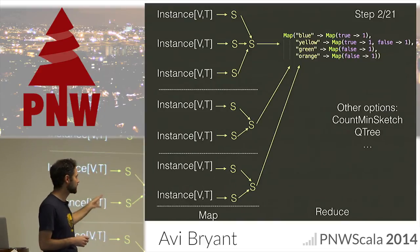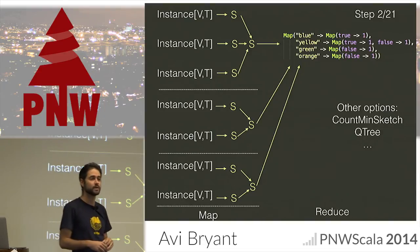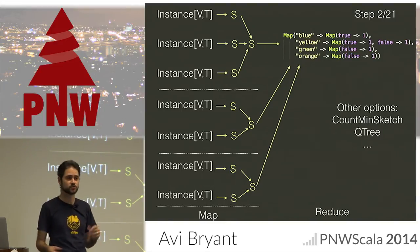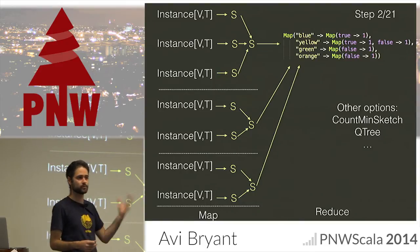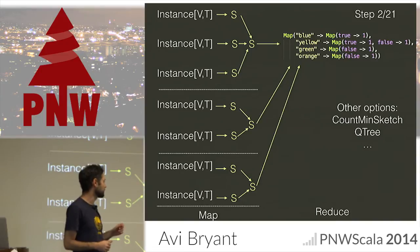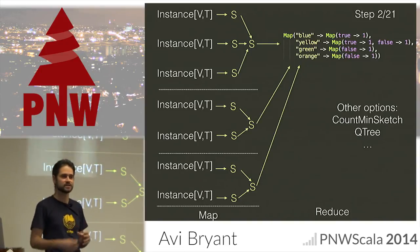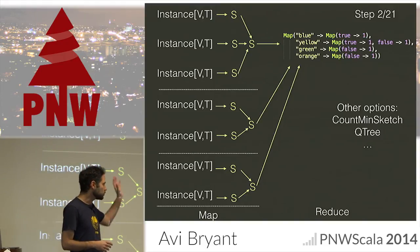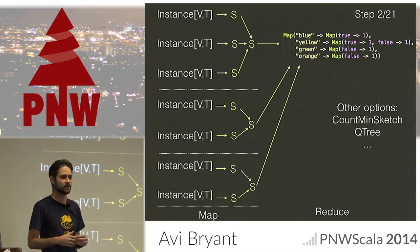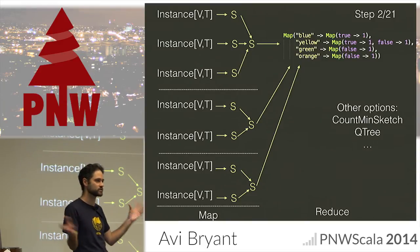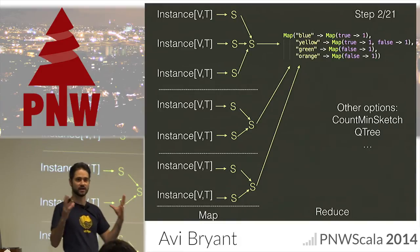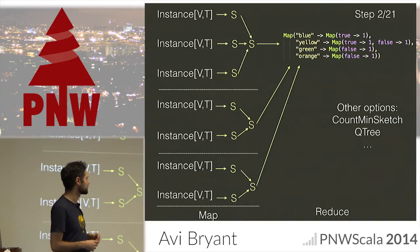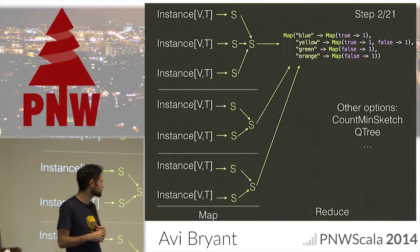This is a very simple case where we have a small number of discrete values. We might have a large number of discrete values, so we might choose an approximate data structure like a count-min sketch to represent the joint distribution. We might have a continuous variable, in which case we probably need some kind of approximation, binning, or something similar. We use the Algebird library, which has a lot of these approximate data structures that can represent a large joint distribution in a fixed amount of space, distributed.